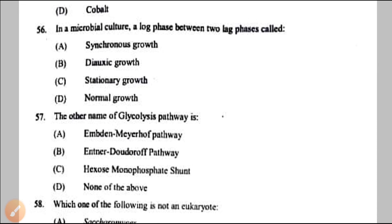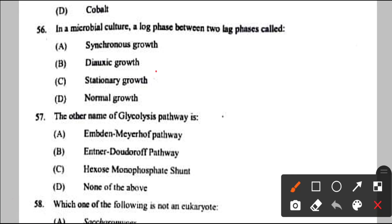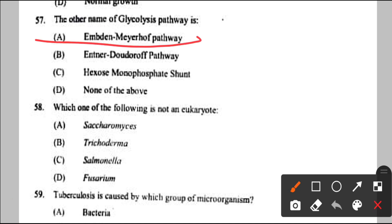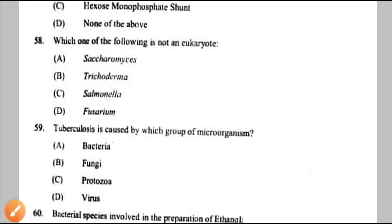Question number 56: in a microbial culture, a log phase between two lag phases is called diauxic or biphasic growth — option B. Question number 57: another name of the glycolysis pathway is the Embden-Meyerhof-Parnas pathway — EMP pathway.